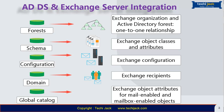The domain partition contains information about recipient objects, including mailbox-enabled users, mail-enabled users, groups, and contacts. Mail-enabled and mailbox-enabled objects have pre-configured attributes such as email address. When you install Exchange Server, those email attributes replicate to the global catalog. The Global Address List (GAL) is generated from the recipients list in the Active Directory forest global catalog.